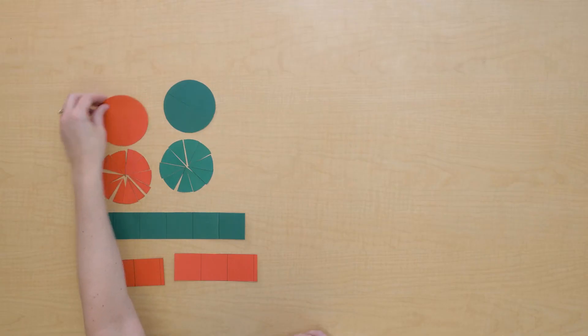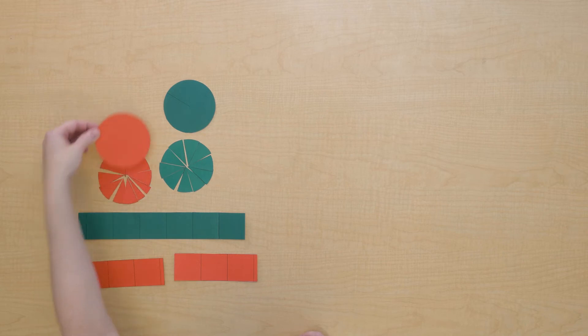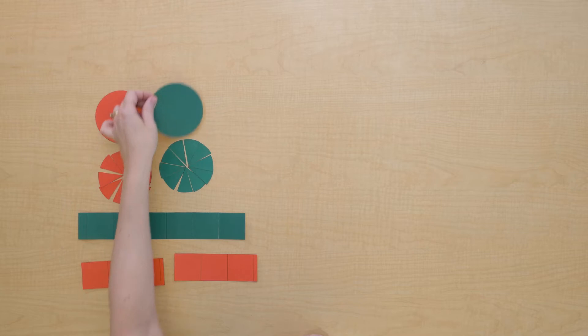Today we're going to talk about finding the area of a circle. I have here some circles, and those circles divided. We can see that they're equivalent, and we've got some rectangles here as well.